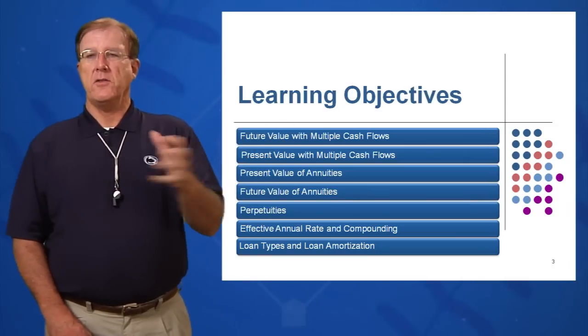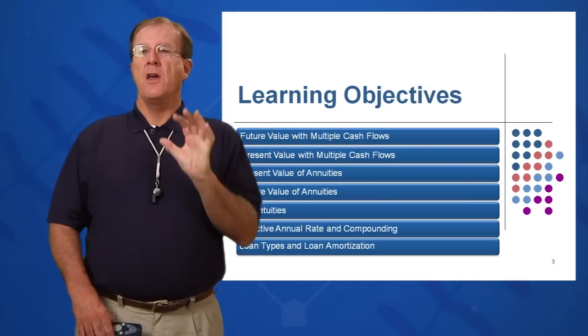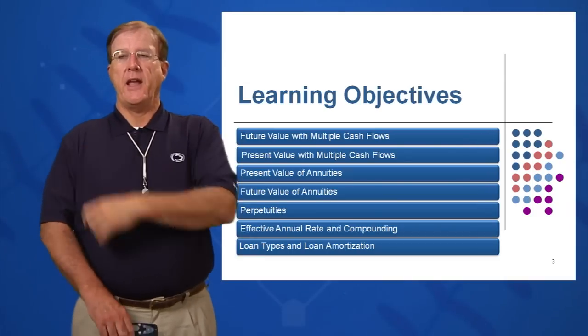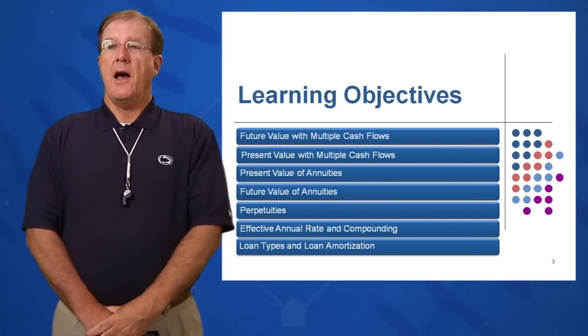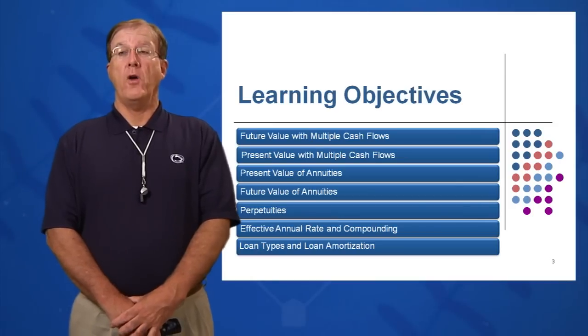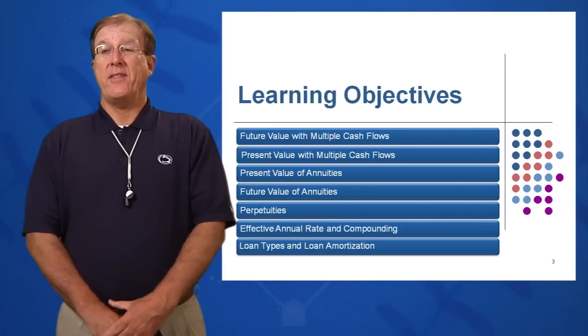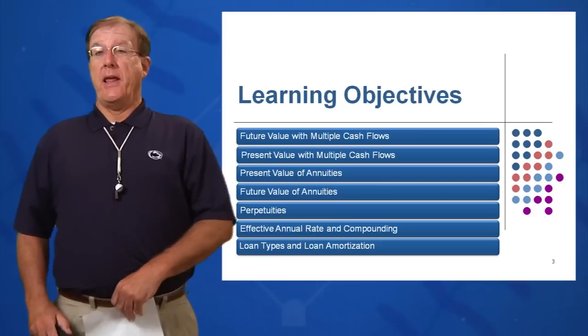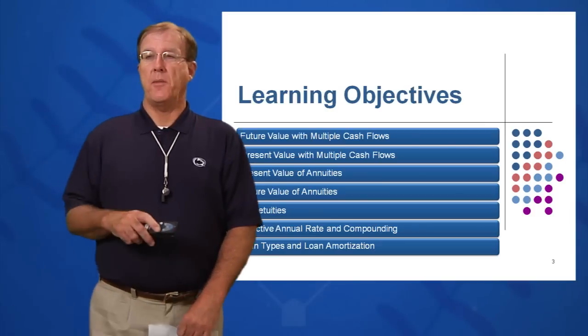Present value of it. So we're going to discount cash flows back to the left and we're going to future value those annuities, taking them out to the right. We're also going to look at perpetuities, which are cash flows, annuities that go on forever. We're going to look at the EAR and compounding and also different loan types, which may use some of these concepts.